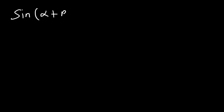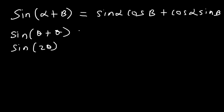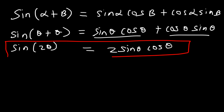Now let's talk about the double angle formulas that you need to know. Perhaps you remember the equation sine(α + β) = sine α cosine β + cosine α sine β. Using this formula, sine(θ + θ) is the same as sine 2θ, where α and β are both θ. This equals sine θ cosine θ + cosine θ sine θ, which is 2 sine θ cosine θ. Thus we have the double angle formula for sine: sine 2θ = 2 sine θ cosine θ.